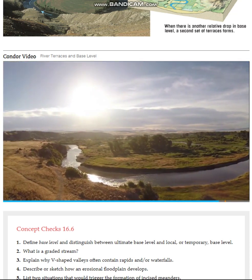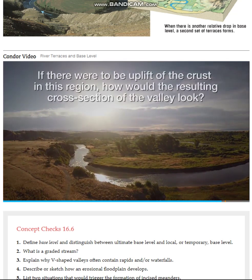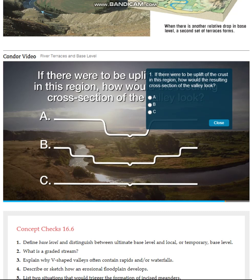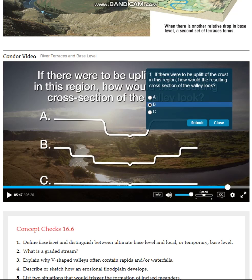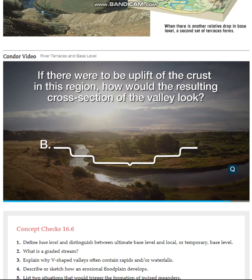Back at the Gallatin River, there is one terrace above the current floodplain level. If there were to be uplift of the crust in this region, how would the resulting cross section of the valley look? The answer is B: the uplift would cause the river to cut down and create a floodplain at yet a lower level, leaving two terrace levels on each side of the current floodplain.